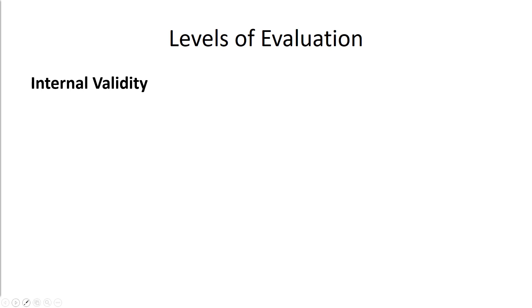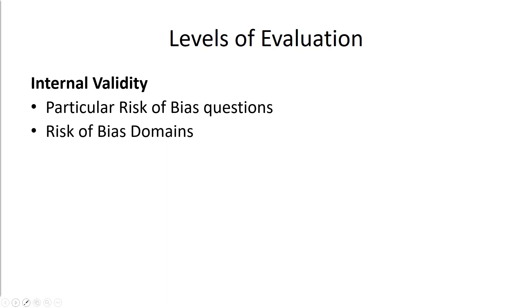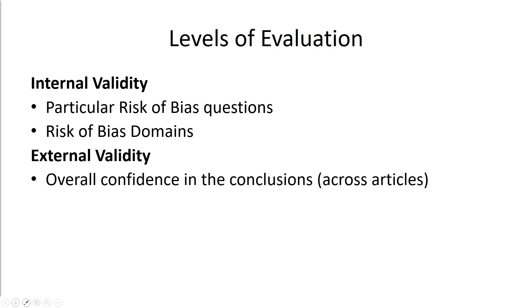First, we have to talk about the internal validity of an article. We do this by evaluating particular risk of bias questions, often called signaling questions. These signaling questions guide us to make a broader decision about the risk of bias within particular domains. Then we have to think about external validity — the overall confidence in the conclusions we can have across studies that provide the body of evidence.